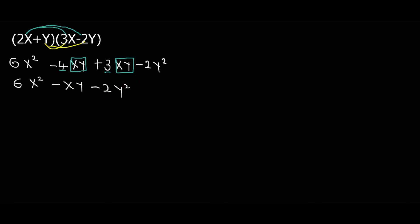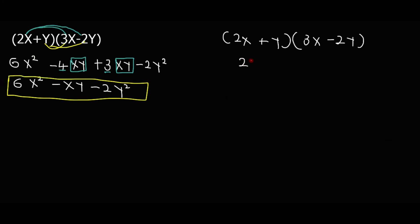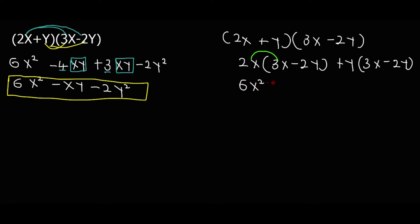From here, add the like terms. 6x squared is alone. Then xy and xy are like terms, so minus 4 plus 3 gives minus 1, so minus xy. And minus 2y squared is alone. So our answer is 6x squared minus xy minus 2y squared.